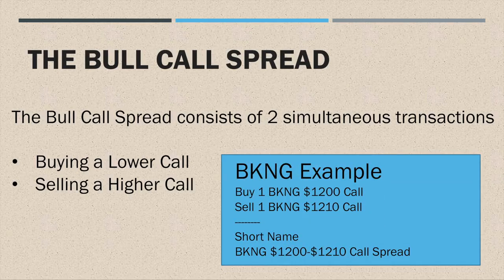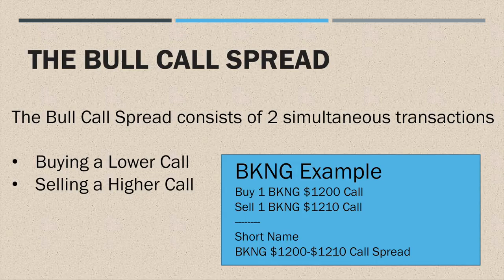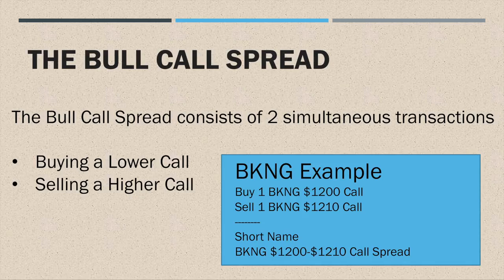Here's an example. The stock is BKNG — Booking Holdings, previously known as Priceline. When I refer to it in my trade alerts, I'll say I'm buying a BKNG 1200-1210 call spread. What that means is I'm buying a BKNG 1200 call and then selling a BKNG 1210 call at the same time.